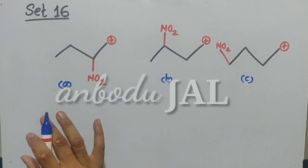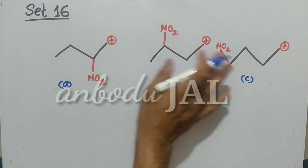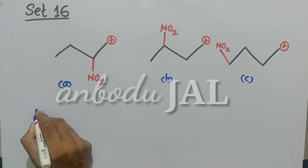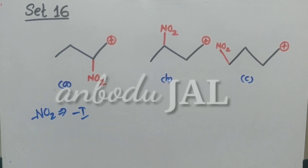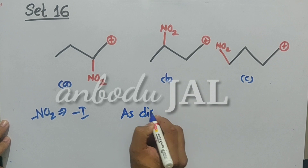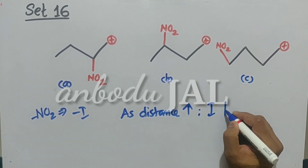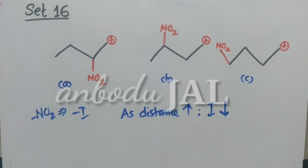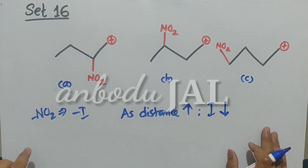In these three structures, NO2 group is present. NO2 group is nothing but a minus I group. We know that as distance increases, I effect decreases — whether it is plus I effect or minus I effect, as distance increases, inductive effect decreases.